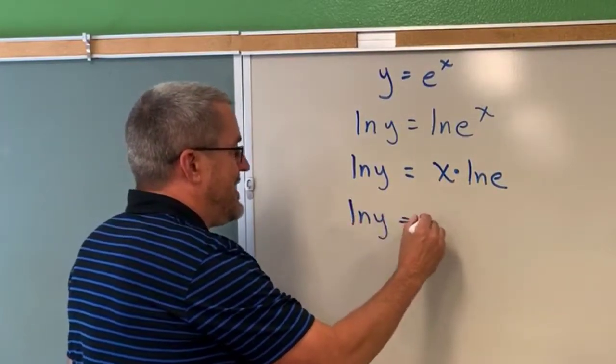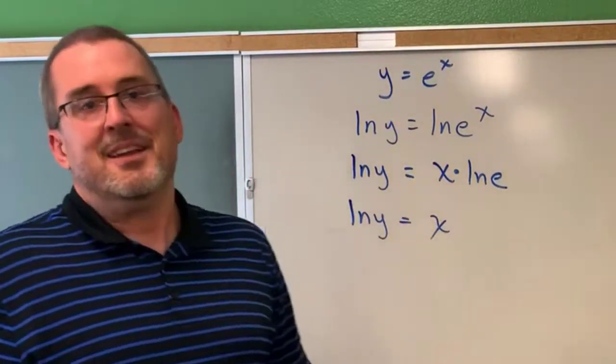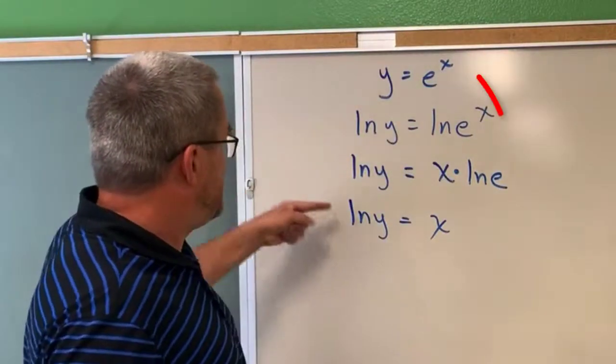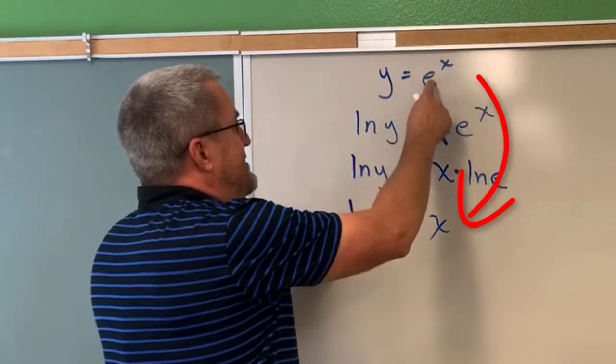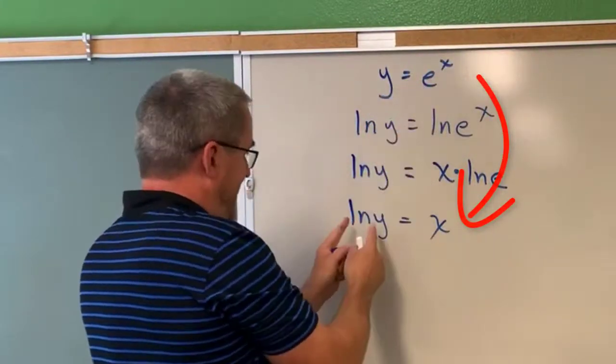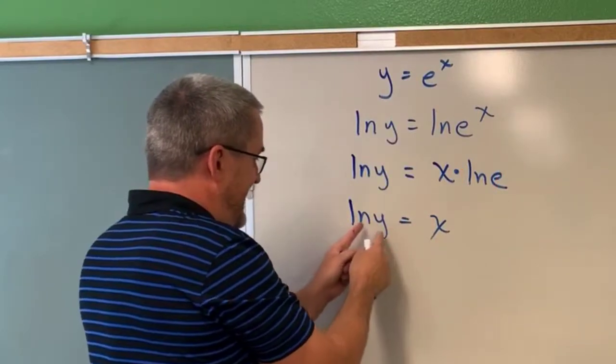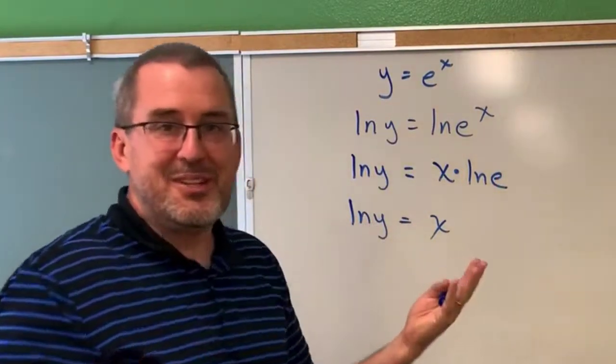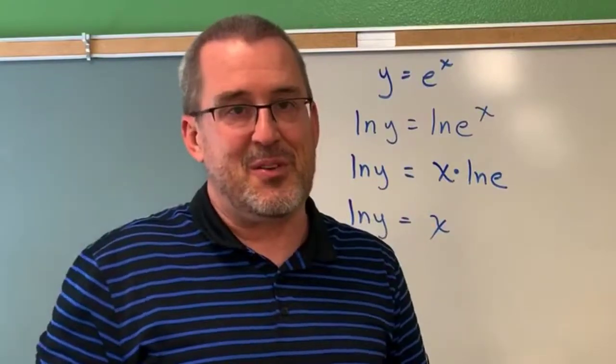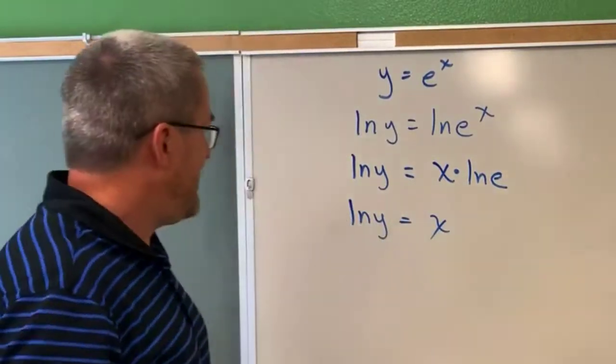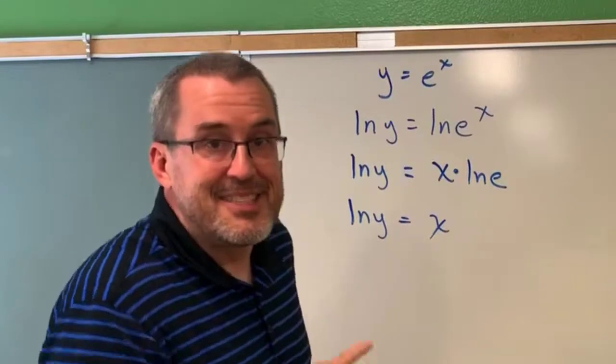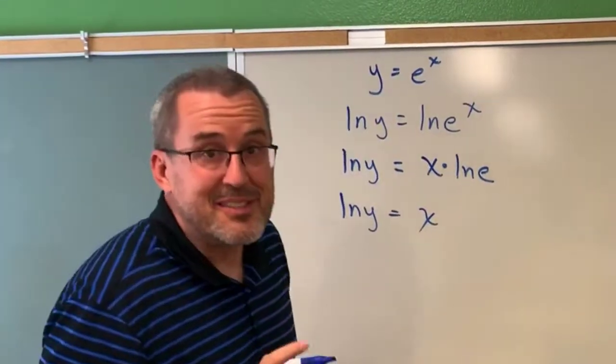So we can further simplify and say the natural log of y is equal to x. You can also just make that jump because x is the exponent on e that produces y. We're really just applying the properties of logarithms and exponential functions and rewriting this equation. But now let's take the derivative implicitly and see what happens.